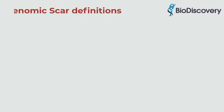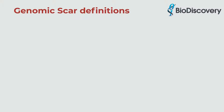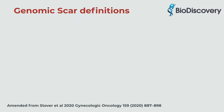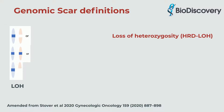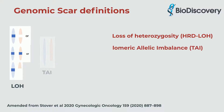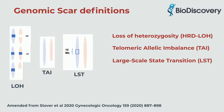The definitions for genomic scars include the loss of heterozygosity or HRD-LOH, telomeric allelic imbalance or TAI, and large-scale state transition or LST.